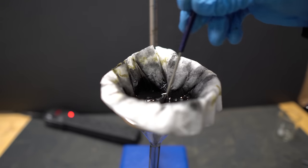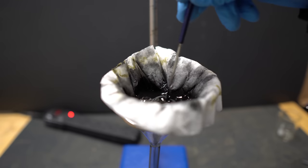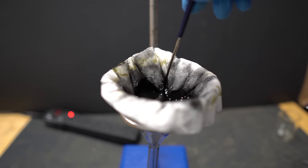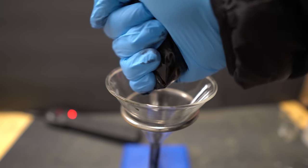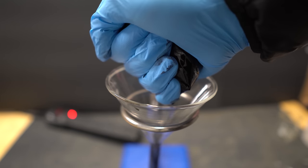I used my spatula to move around the charcoal just to aid a little bit in the filtration, but a lot of the charcoal was actually going through the filter and it was pretty annoying. I decided to squeeze the coffee filter with the activated charcoal just to get as much acetone out of the filter as I could.